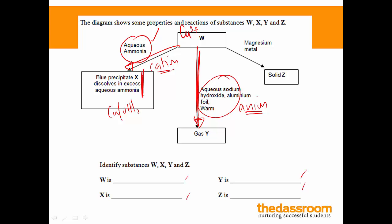So if you flip to your notes on the anions, sodium hydroxide, aluminum foil, warm gently, you're testing for the presence of, once again, a nitrate ion. The gas formed is ammonia gas, and this tells you that W contains the nitrate ion. So we have now identified W, X and Y. W is copper 2-nitrate.